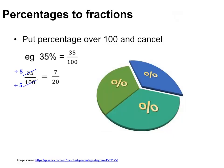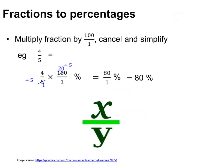A percentage is a fraction out of 100. To change a percentage to a fraction, make the percentage as a fraction out of 100 and then simplify. To convert a fraction to a percentage, multiply the fraction by 100, cancel and simplify.